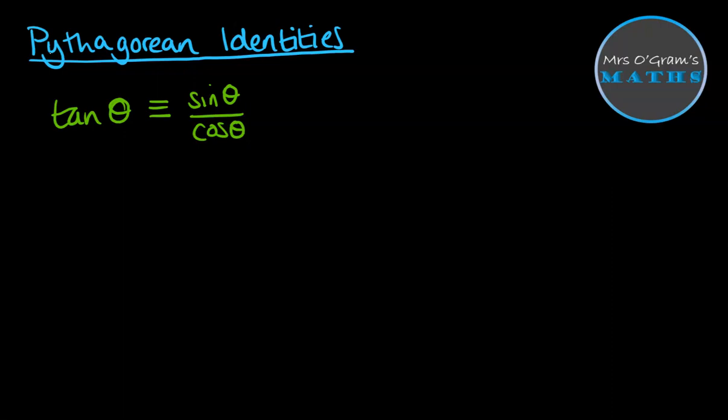It just means that it's always true, no matter what the value of theta is. And we also have that sin squared theta plus cos squared theta is equal to 1. Again, it's identically equal to, it will always be equal to 1, no matter what value theta is.